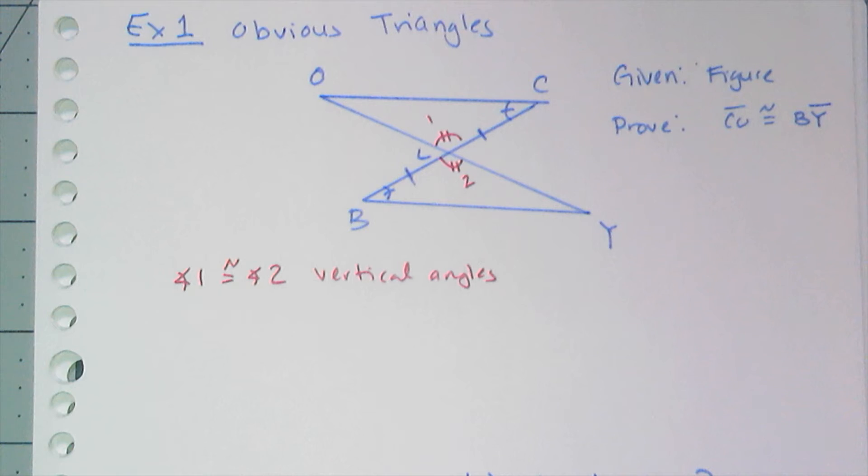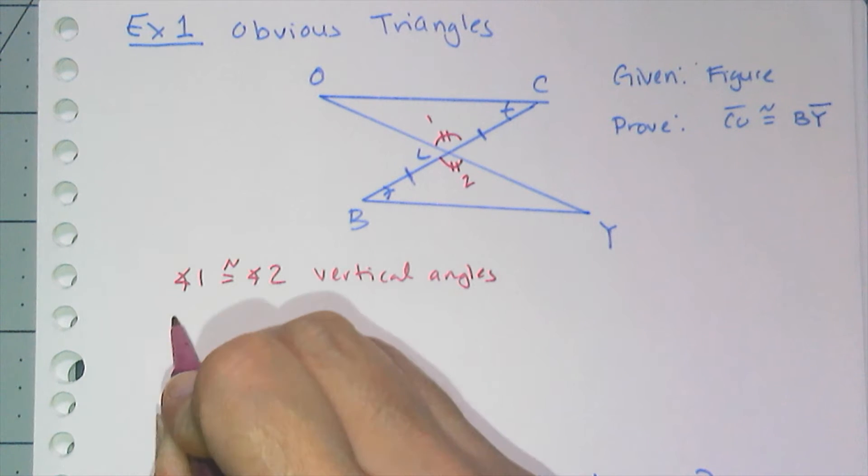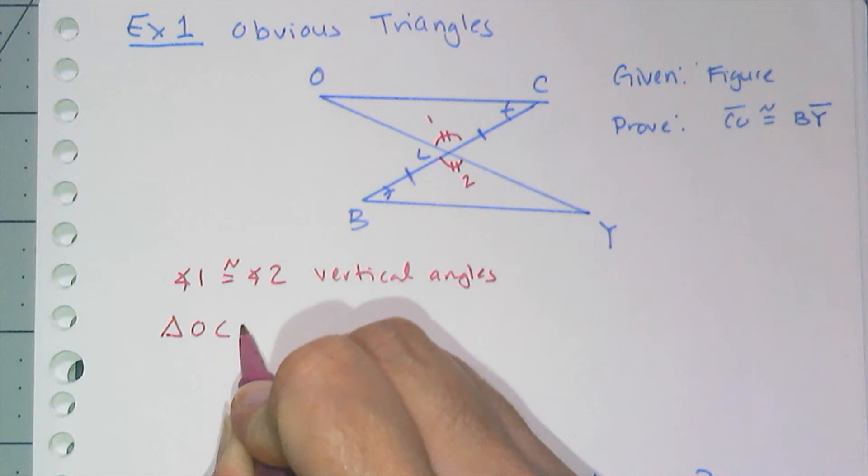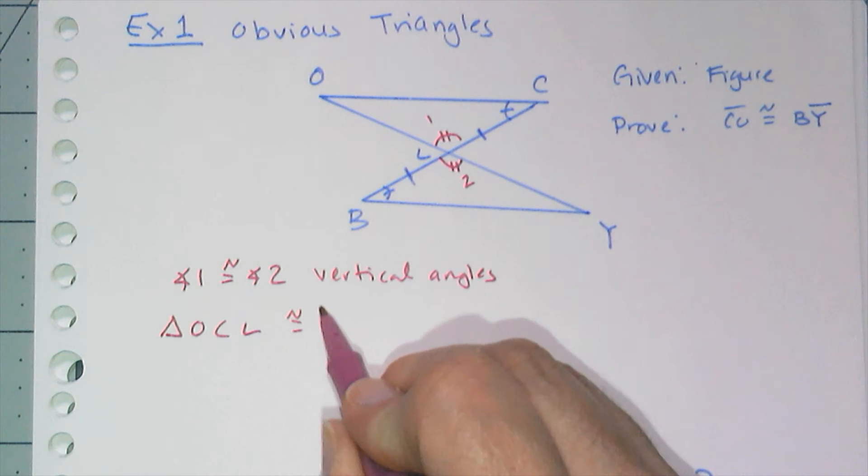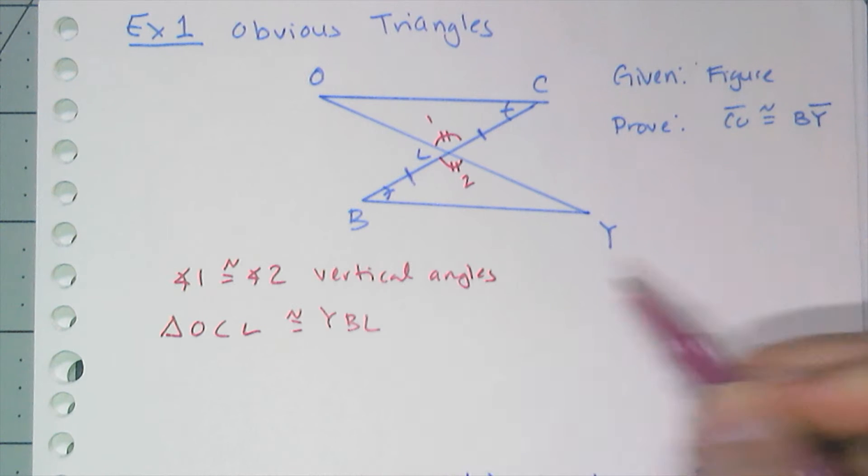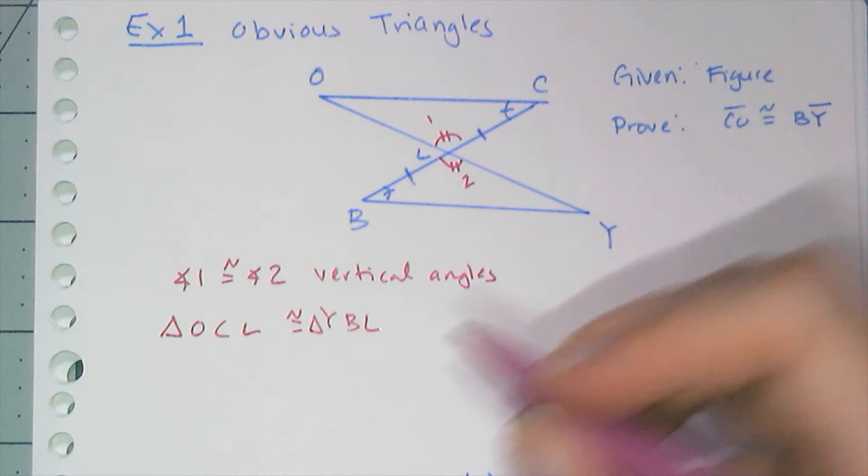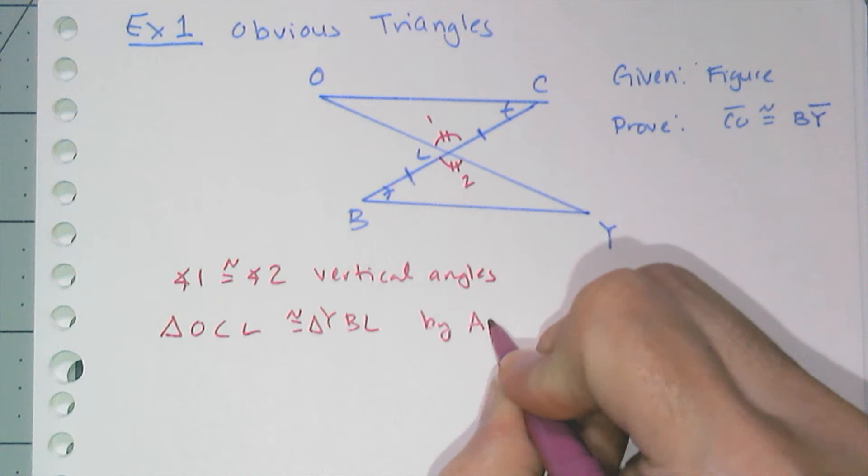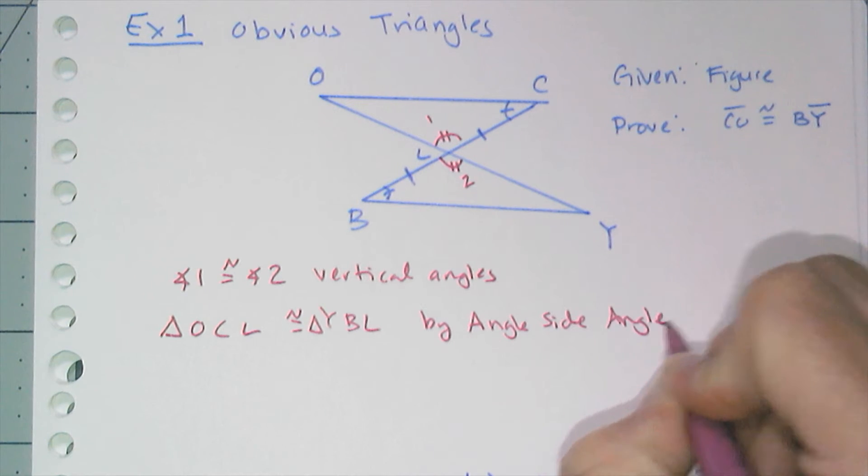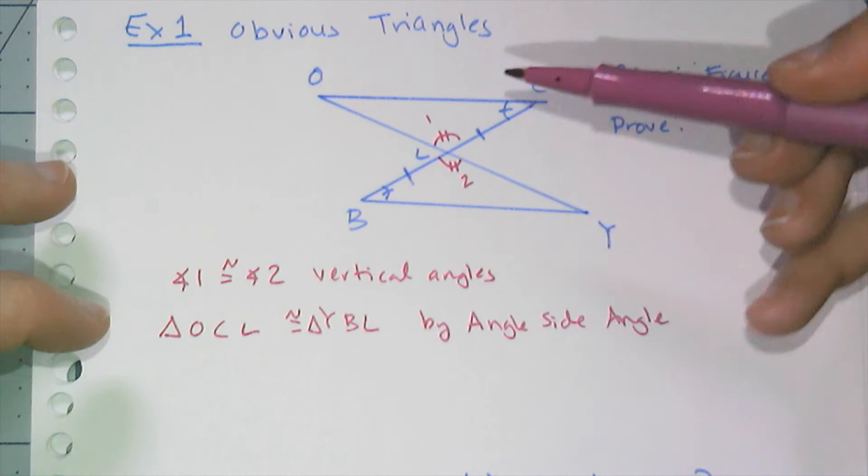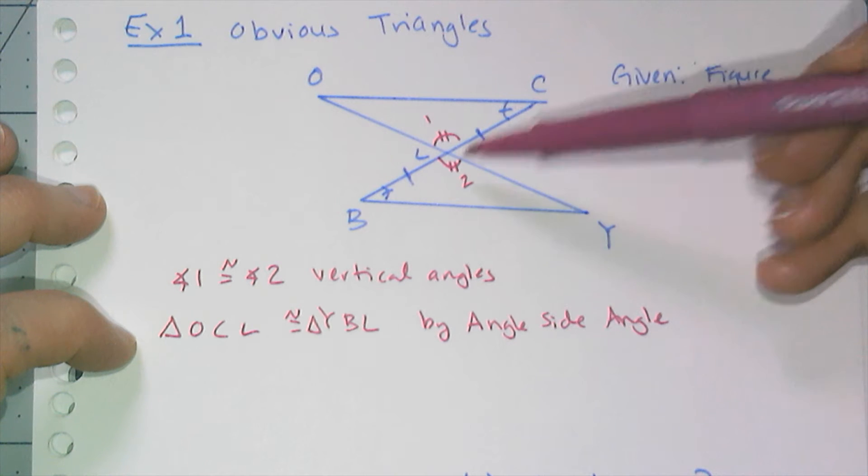And then I know that triangle OCL is congruent to triangle YBL—oh, I forgot triangle—BYL by angle-side-angle. Let's make sure I named those correctly: O-C-L, Y-B-L. Okay, I did.